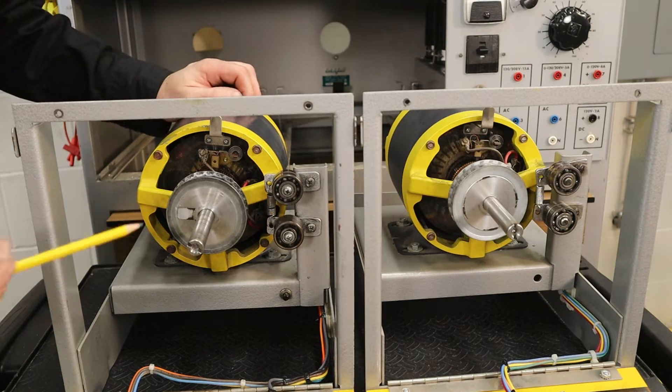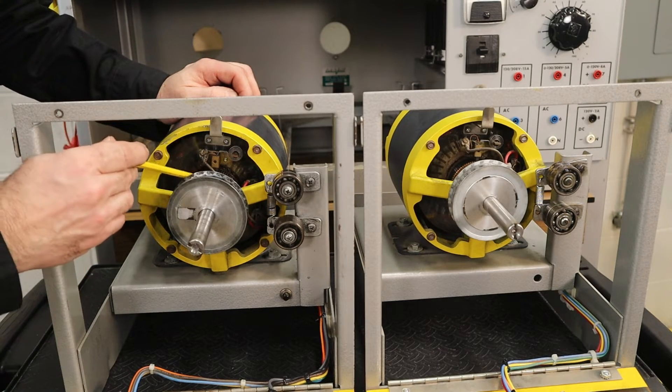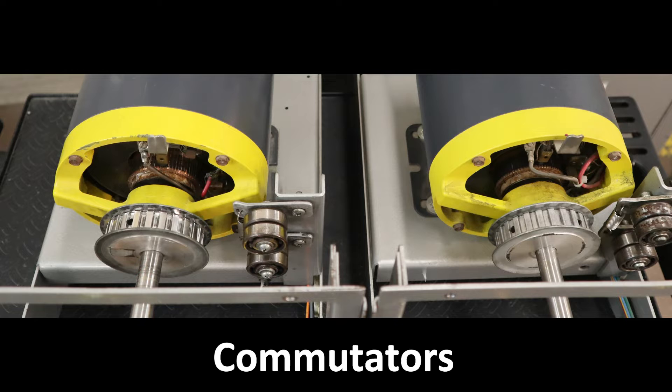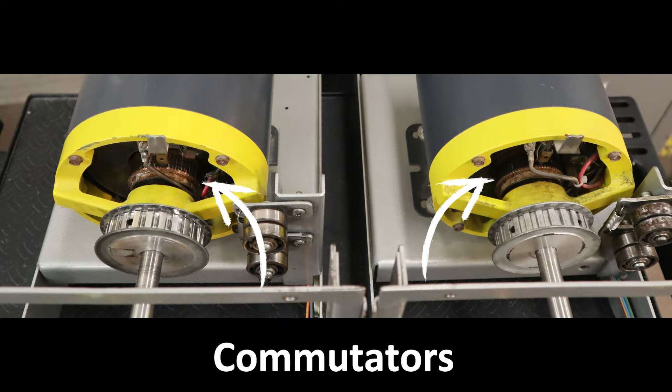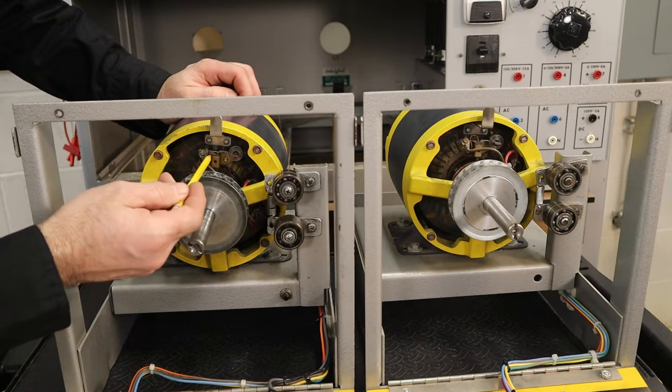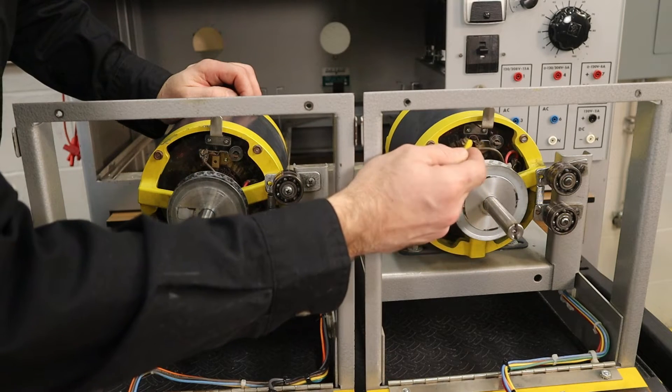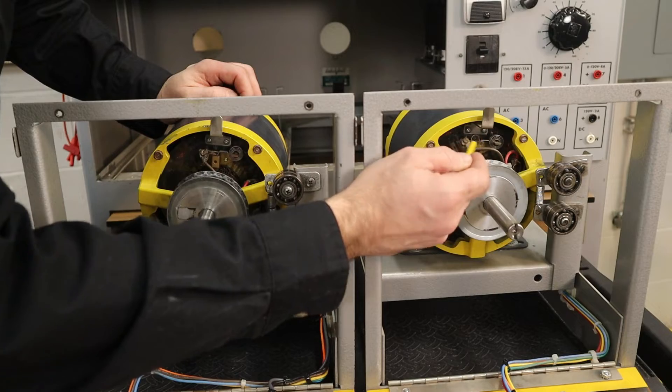What we should be able to notice is that both units have a commutator. They both have brush holders as well as what we can see here are carbon brushes.